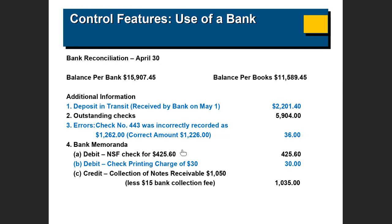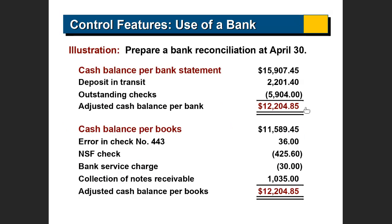The second item is very simple: the bank charged a $30 fee for printing checks that you did not subtract from your books, so you subtract that. Third, the bank collected notes receivable — directly deposited $1,035 into your account from one of your borrowers — which you did not add to your books, so you add $1,035. Once you do all these additions and subtractions, both sides should show the same amount: $12,204.85.